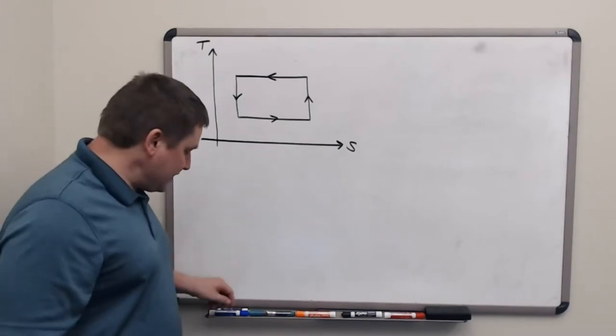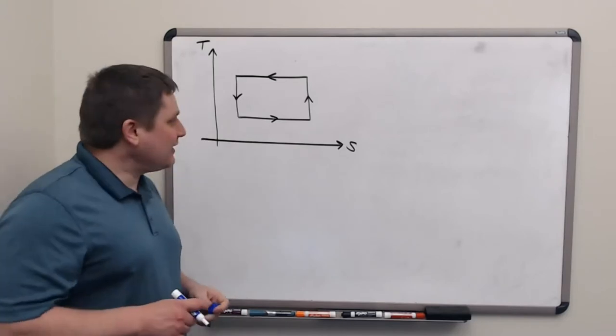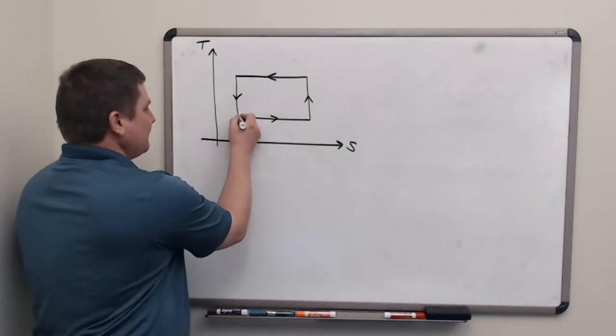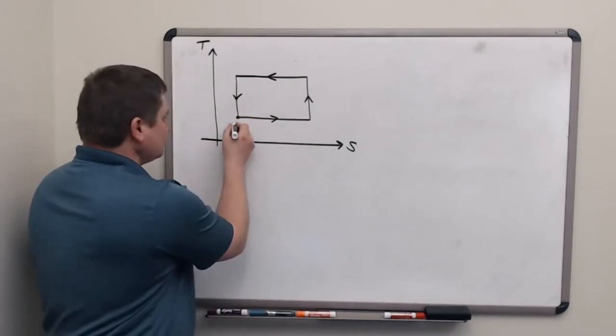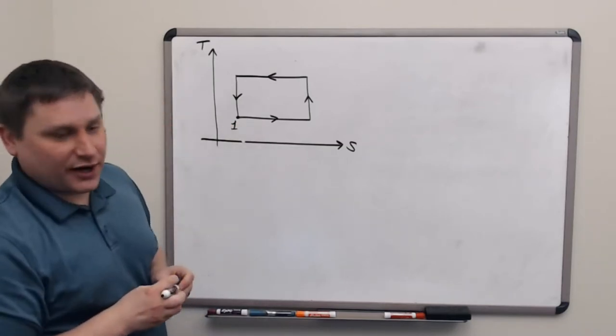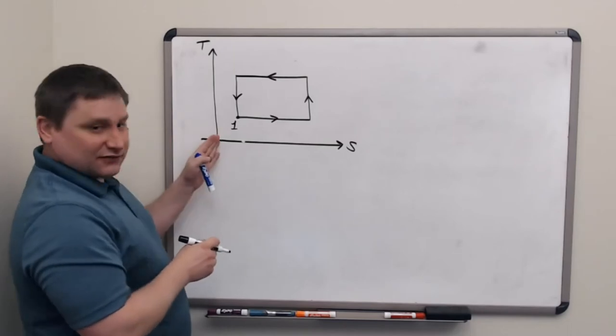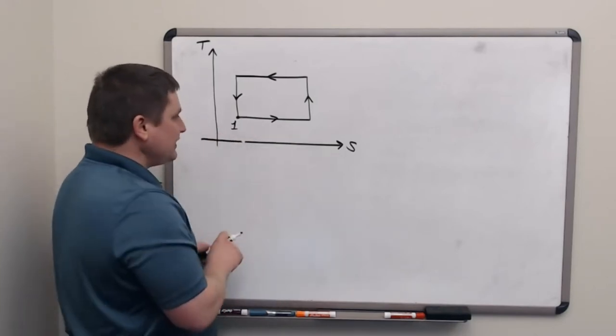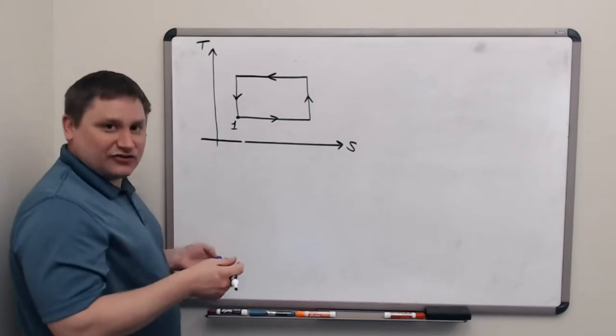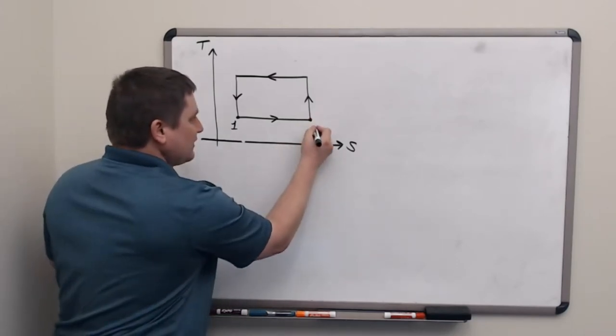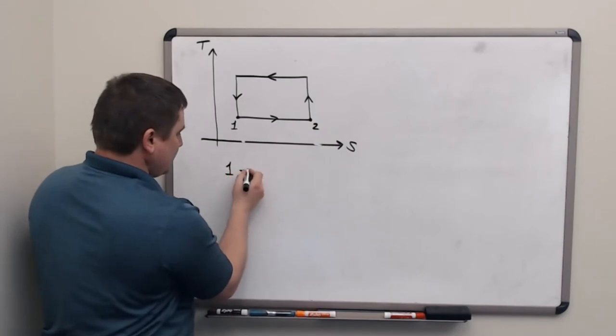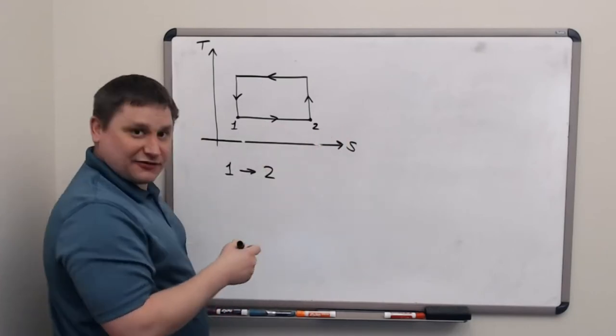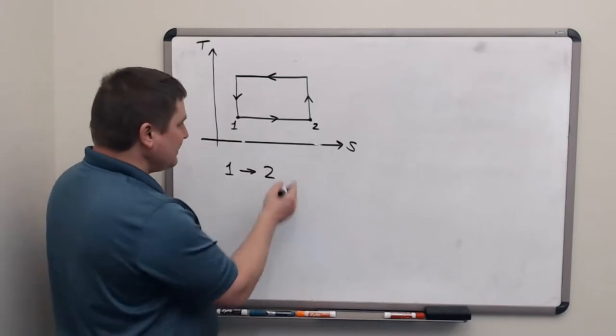Let's talk through each one of these steps and see what's happening. Starting in this bottom left corner, label that as corner 1, the system starts at a state of low entropy and low temperature, so it's cold and it's small. The first thing it does is it moves to the right, it gains entropy. Between corner 1 and corner 2, the working substance is actually heating up. It's gaining heat isothermally.